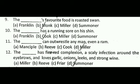Next question: The dash's favorite food is roasted swan. The correct answer is B, that is the Monk. Next question: The dash has a running sore on his shin. The correct answer is B, that is the Cook. Next question: The dash can out-wrestle any man, even a ram. The correct answer is D, that is the Miller.